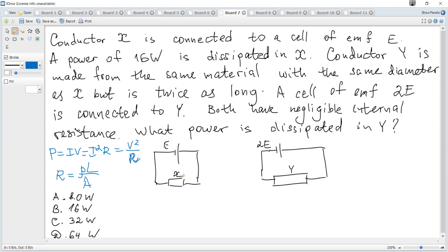And if we consider conductor X, 16 can be found as, if we consider this formula, since there are no any other conductors or resistors in series and also internal resistance is negligible, voltage across X is directly EMF. So if we use this formula it becomes E squared over resistance.